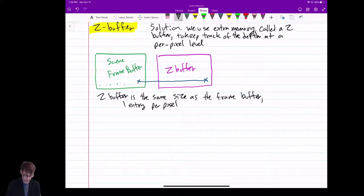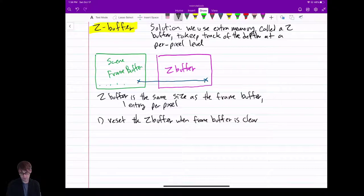And this is how it works. One, let's make sure to reset the Z Buffer when the frame buffer is cleared. And what we do is we set it to the far plane depth. So basically, it's the furthest away it can be.